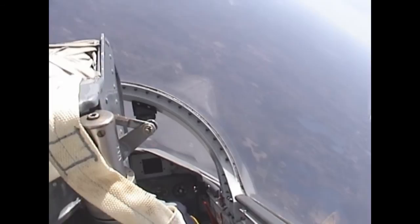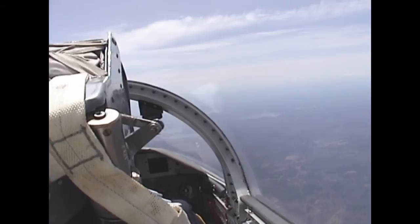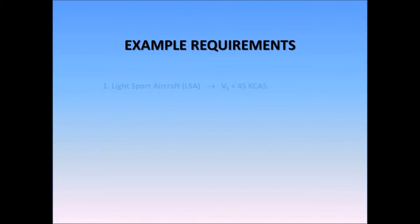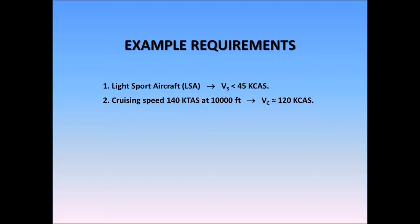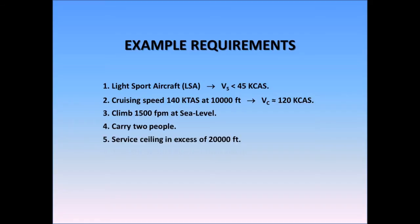So consider this scenario. You are a professional aircraft designer and are approached by a potential customer who says: I want you to design me an airplane that does this, that, and the other thing. Let's say the customer wants you to design a light sport aircraft, or LSA. This automatically puts a regulatory stall speed constraint of 45 knots calibrated on the design. The customer might say: I want the airplane to cruise at 140 knots true at 10,000 feet, climb at 1500 feet per minute at sea level, carry two people, have a service ceiling in excess of 20,000 feet, and take off in less than 800 feet at sea level conditions. Of course these requirements could be stated in a much more structured and detailed way, but we are trying to keep things simple here.